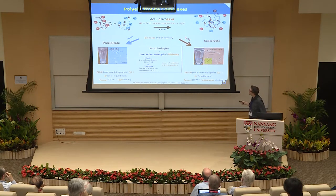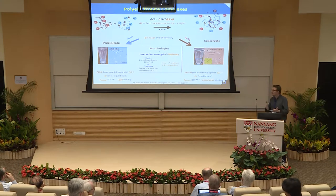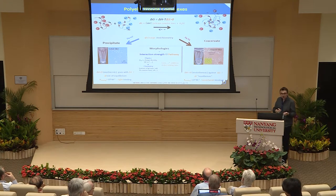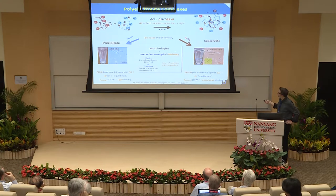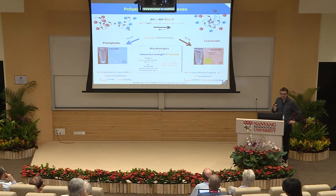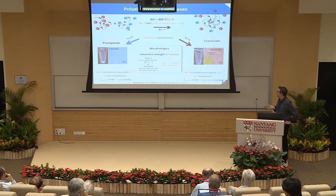This is the take-home message: the generated morphology depends on the interaction strength and the pathway, as I've shown. But the interaction strength is not only physics — chemistry is very important, as I will show you later on.